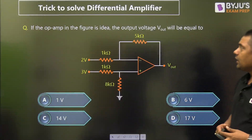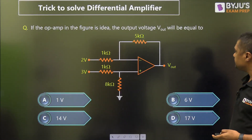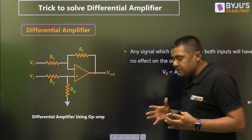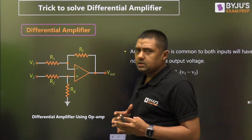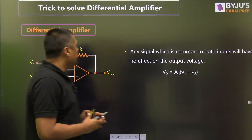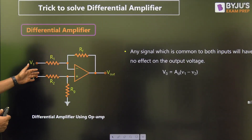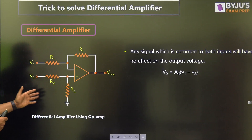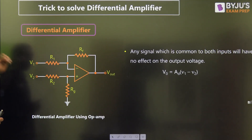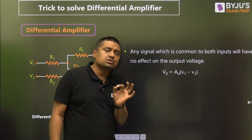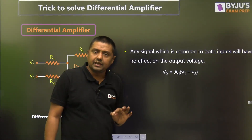First of all, this is a differential amplifier. Differential amplifier means the output is proportional to the difference of inputs only. For an ideal differential amplifier, the output should be only proportional to V1 minus V2, or V2 minus V1, given by A_D. A_D is called the difference gain.